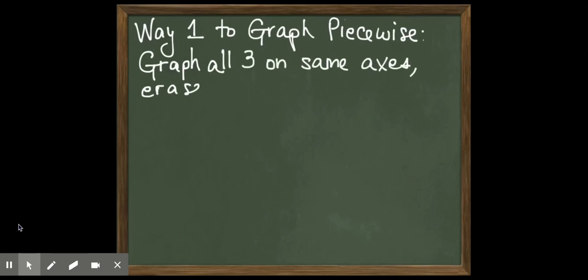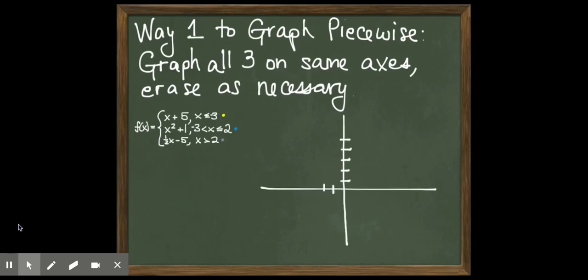There are two ways to do this. So the first way to graph a piecewise function is to graph all three functions on the same set of axes, and then erase as you need to. So we'll look at our function again, super tiny because we've seen it a whole bunch of times. What I can do is I can take all three functions and I can graph them all, and then I can get rid of the bits that I don't need.